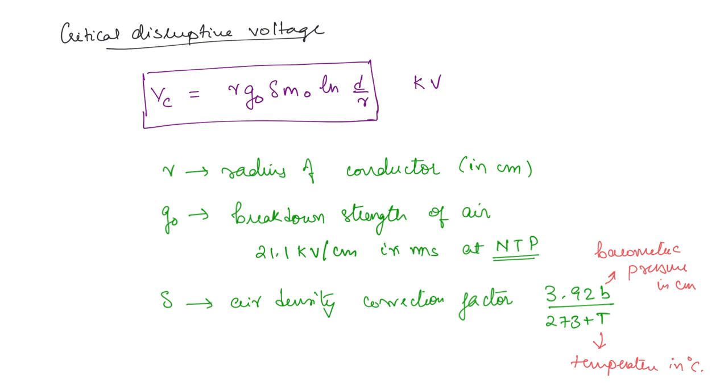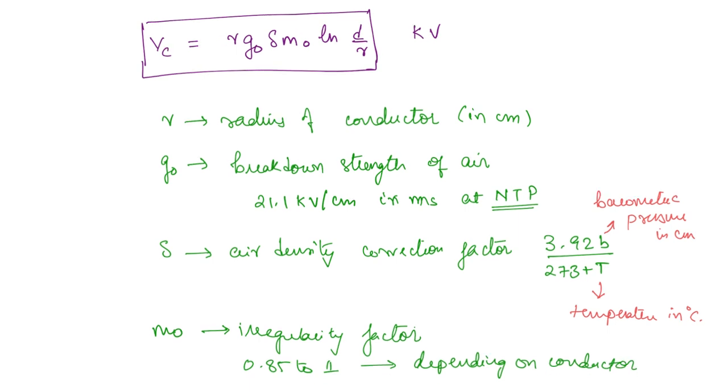Next we have M naught irregularity factor. This will depend on the type of conductor. It typically varies from 0.85 to 1 depending on the conductor.